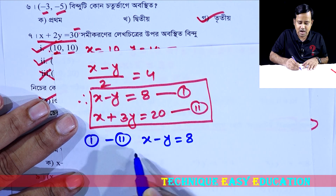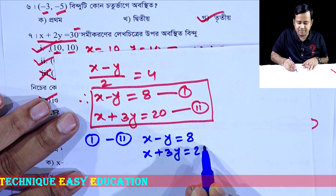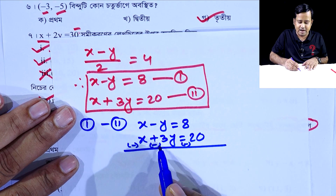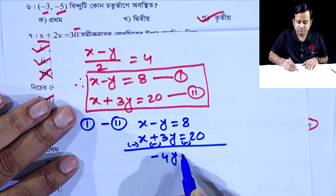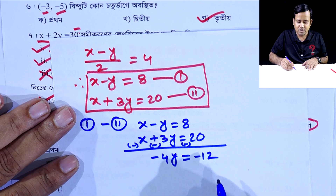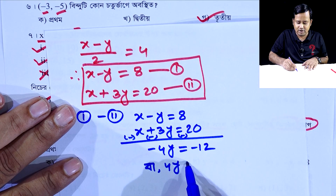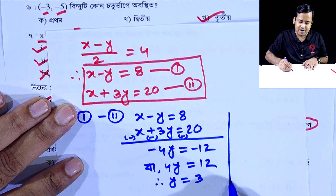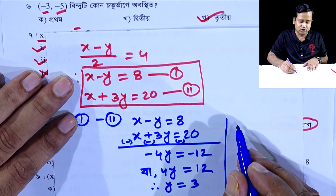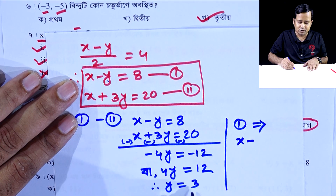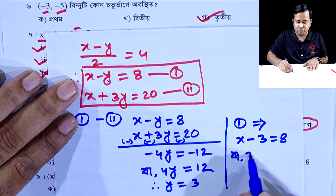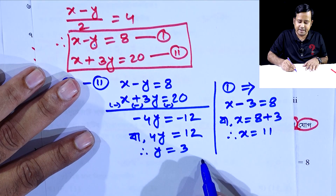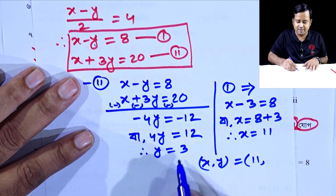x minus y equal to 8 and x plus 3y equal to 20. That means the 2 columns will change: 8 is minus, that means x and x is minus y and minus 3y, that means minus 4y. 8 minus 20 is minus 12, that means minus 4y equal to 12, that means y is equal to 3. So we need to solve x divided by wire number 3.